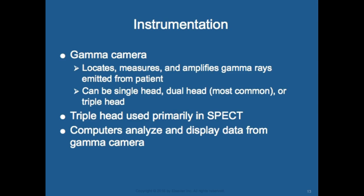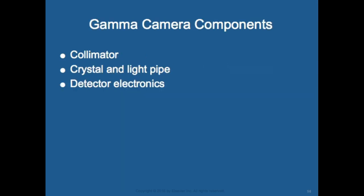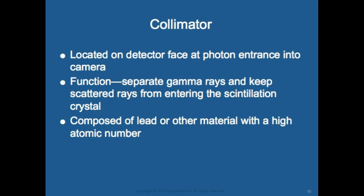A gamma camera localizes, measures, and amplifies gamma rays emitted from the patient. It can be single head, dual head (the most common in facilities nowadays), or triple head, which is usually used in SPECT. Computers analyze and display data from gamma cameras. The components of a gamma camera are the collimator, crystals and light pipes, and detector electronics. The collimator is located on the detector face at the photon entrance.